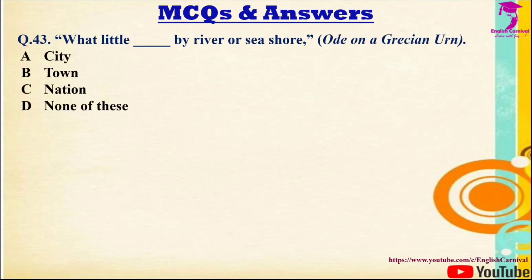Question 43: 'What little — by river or seashore?' Options: A) City, B) Town, C) Nation, D) None of these. Correct answer is B — town.